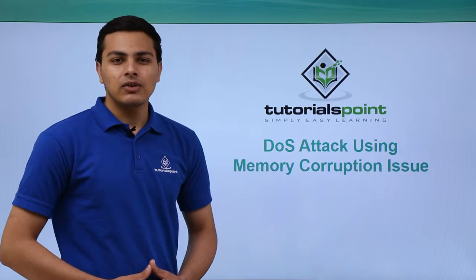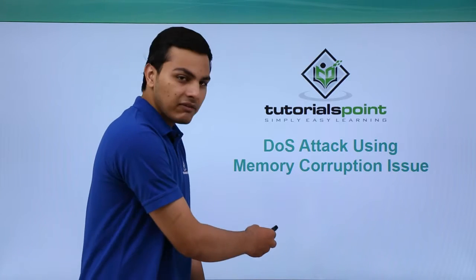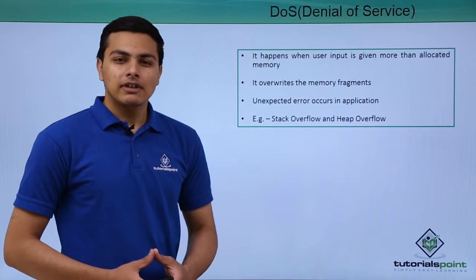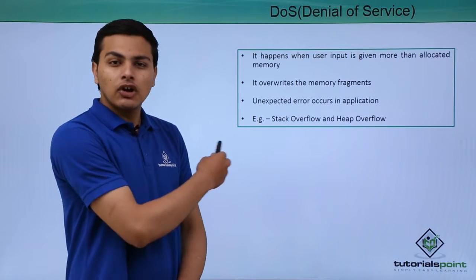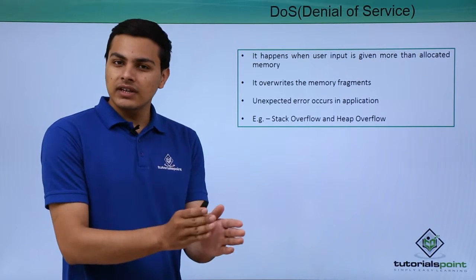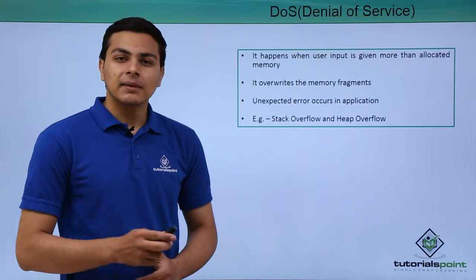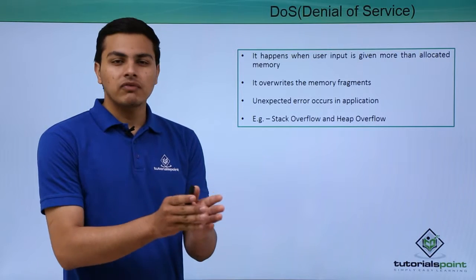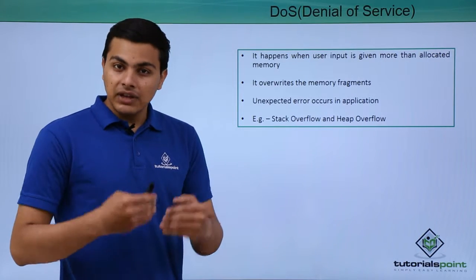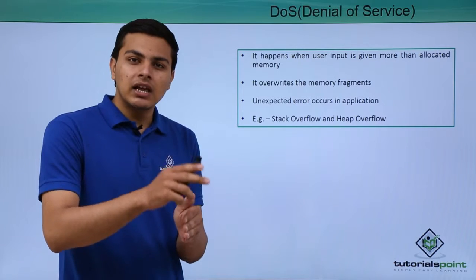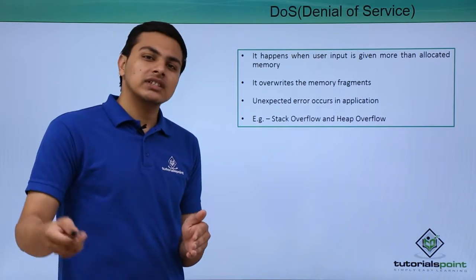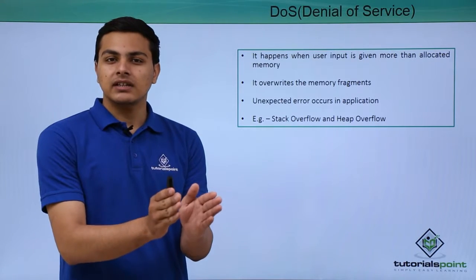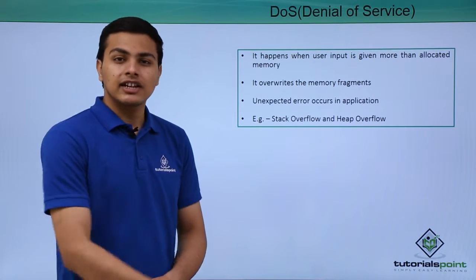In this video we'll look at a memory corruption issue in DIVA that caused a DOS attack. Before discussing the memory corruption issue, let's talk about DOS — denial of service. Simply put, DOS means making something unavailable for other users. For example, if we are assessing a website or web server and want to make it unavailable for other users, we would DOS that website.